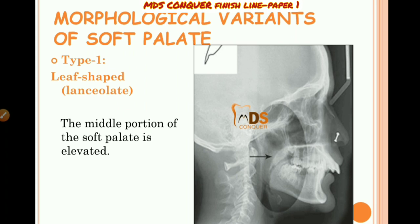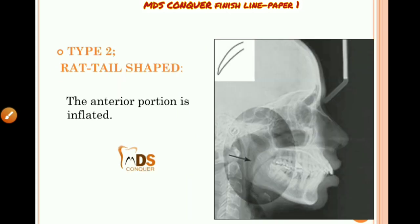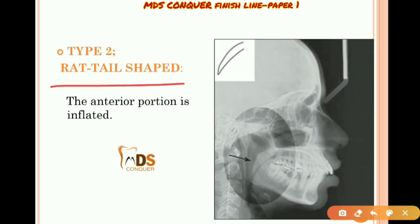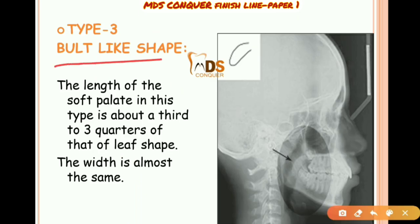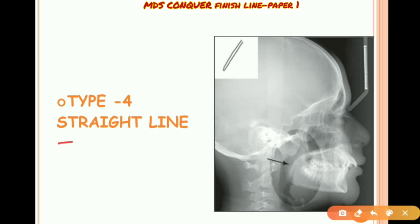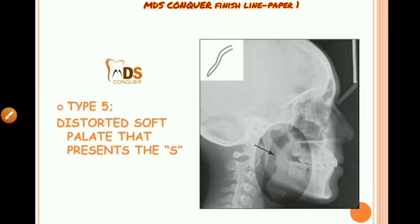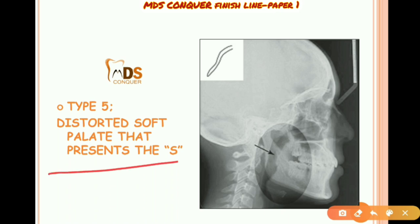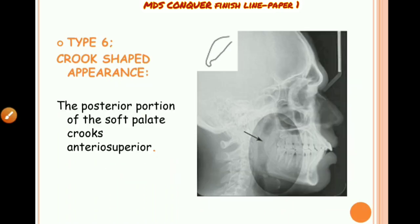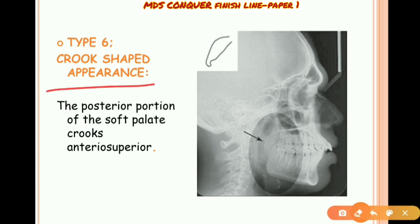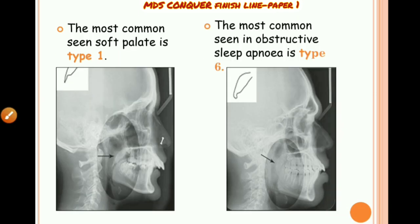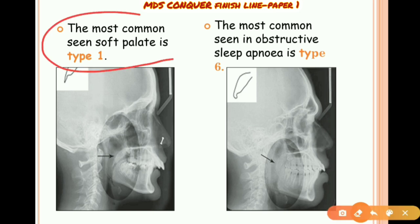Morphological variations of the soft palate seen on radiographs: Type 1 is leaf-shaped or lanceolate; Type 2 is rat-tail shaped; Type 3 is bulb-like; Type 4 is a straight line; Type 5 is distorted, presenting an S-shape; Type 6 is crook-shaped. The most common type is Type 1, whereas Type 6 is most commonly seen in obstructive sleep apnea.